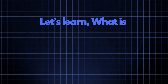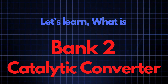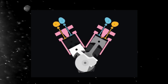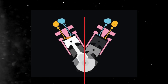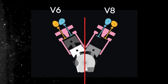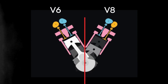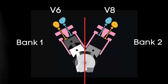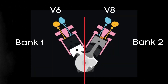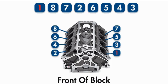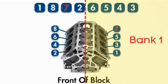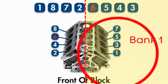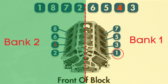Now let's learn what the Bank 2 catalytic converter is. In engines with multiple cylinder banks like V6 or V8 engines, you'll have two sides or banks of cylinders. Bank 1 typically refers to the side of the engine where cylinder 1 is located, and Bank 2 is on the opposite side.